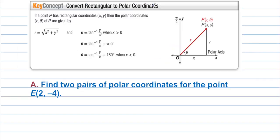Convert rectangular to polar coordinates. If a point P has rectangular coordinates x, y, then the polar coordinates r, theta are given by: r equals the square root of x squared plus y squared — which comes from the equation of the circle. And theta equals inverse tangent of y over x when x is greater than 0. We add π (or 180°) when x is less than 0, because tangent has principal values in quadrants 1 and 4.